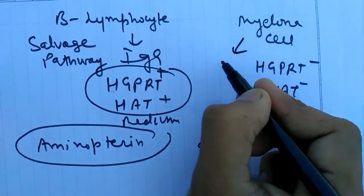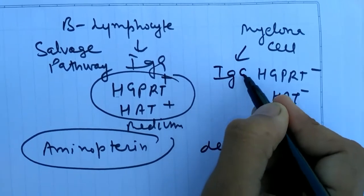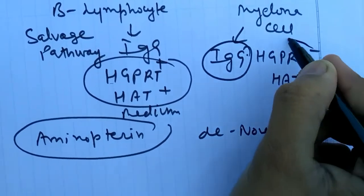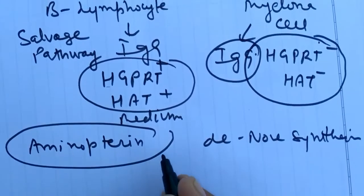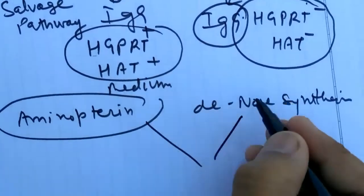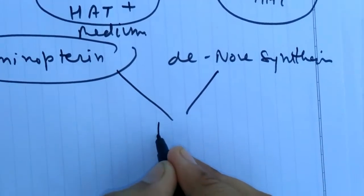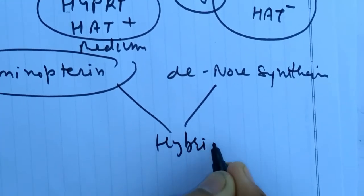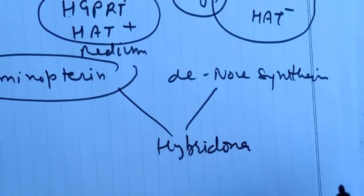These cells have to generate one type of IgG but they cannot grow in this condition. But when we hybridize them, that is hybridoma, they have both properties.